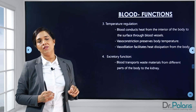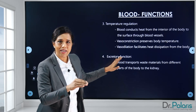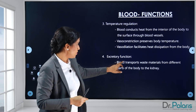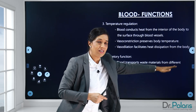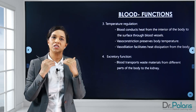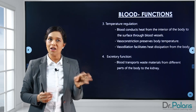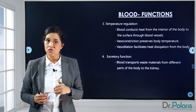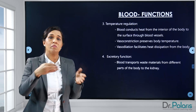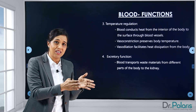Coming to the fourth function, we have the excretory function, which slightly overlaps with the transport medium. Blood transports waste materials from different parts of the body to the kidney. Whenever cellular metabolism is happening, utilizing the oxygen delivered by hemoglobin, carbon dioxide is released. Along with that, there are waste materials poured back into the blood, and blood takes these waste materials away.